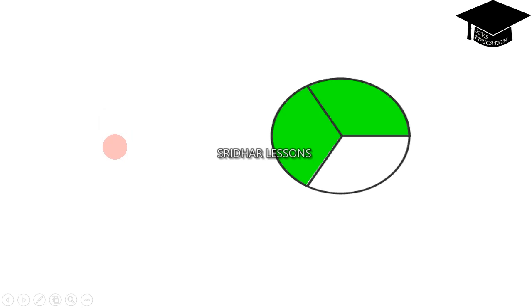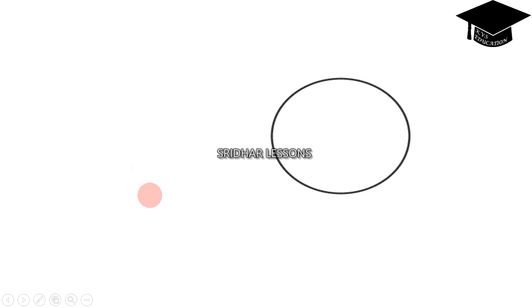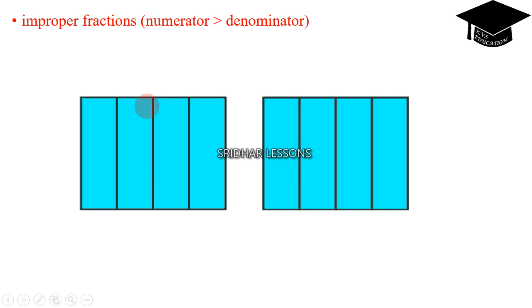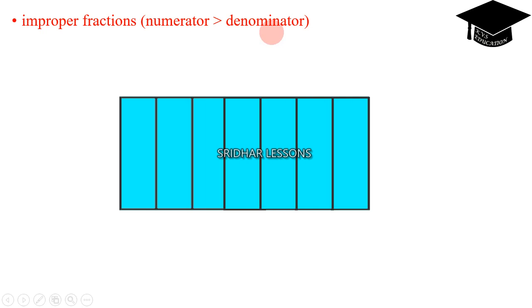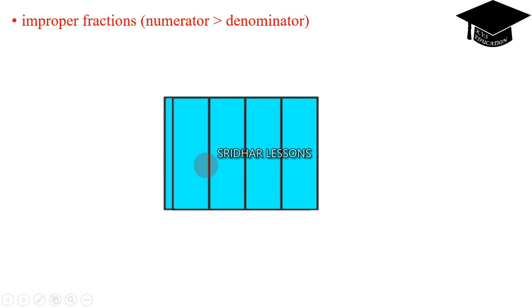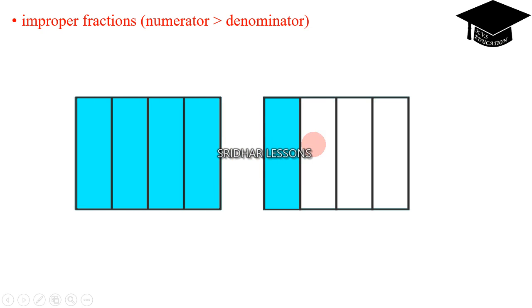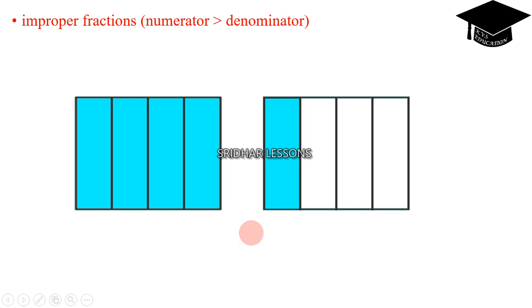Improper Fractions. That means numerator is greater than the denominator. For example, 4 parts and 4 parts gives 4 by 1. Numerator is greater than denominator — these are called improper fractions.